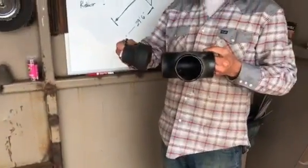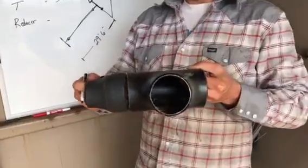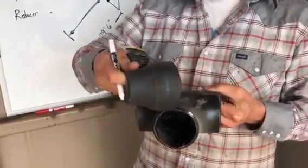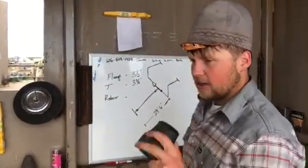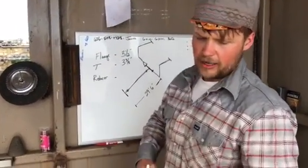So this piece is going to look like this, and then it's going to have a pup coming off of this end with that flange on it. So we need to figure out our takeoff, 2x3 tee.